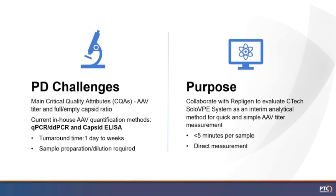Some of the main critical quality attributes we frequently track during process development include AAV genome titer, capsid titer, and the full/empty capsid ratio. Currently, our in-house AAV quantification methods include qPCR and ddPCR for genome titer determination and capsid ELISA for capsid titer determination. These are industry standard testing methods, but the drawback is turnaround time can be between one day and two weeks due to the complexity of these methods and the backlog of the testing lab.